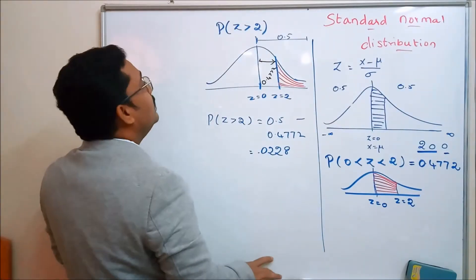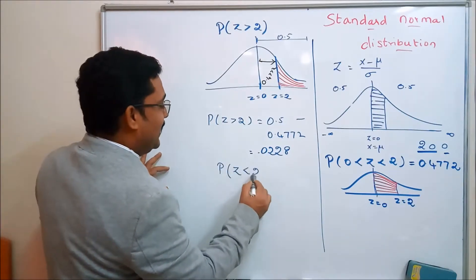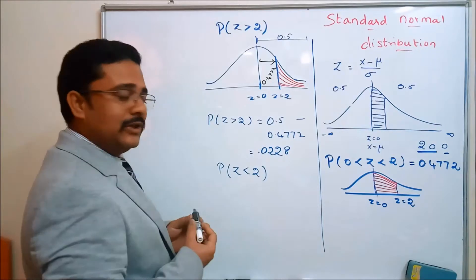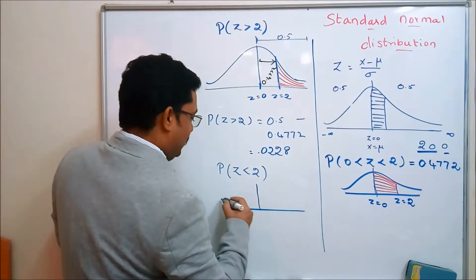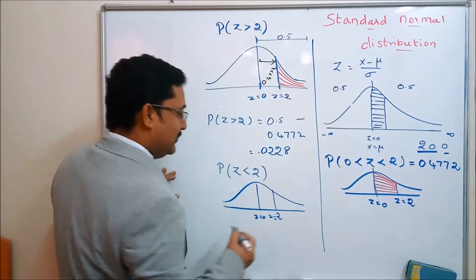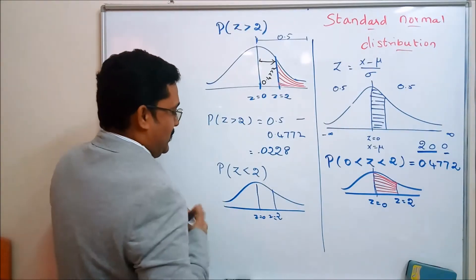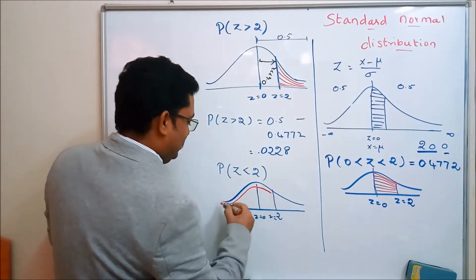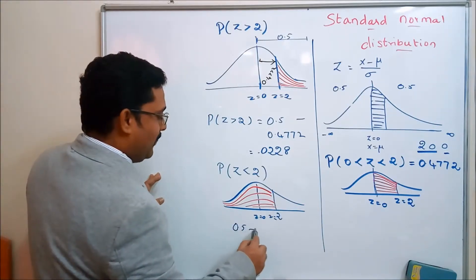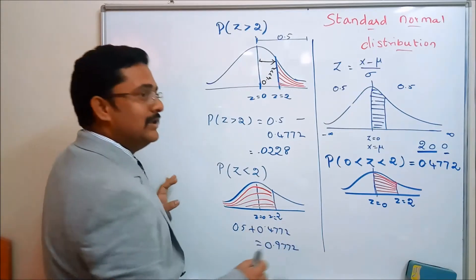Now calculate the probability of Z less than 2. Draw the normal curve showing the area to the left of Z equal to 2. This includes the left half of the curve (0.5) plus the area from 0 to 2 (0.4772). So the total is 0.5 plus 0.4772, which equals 0.9772.